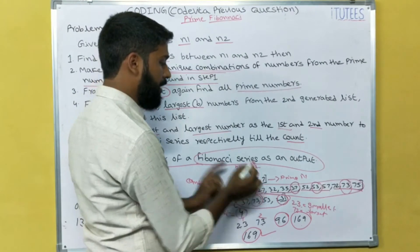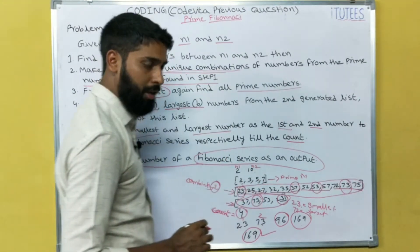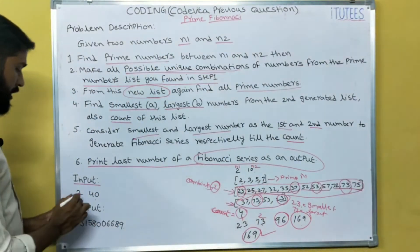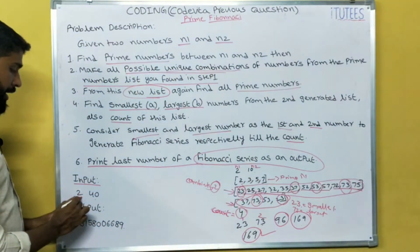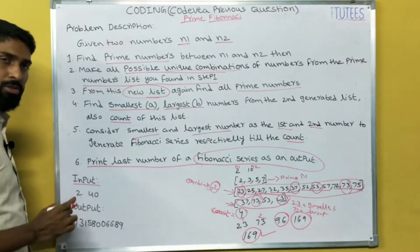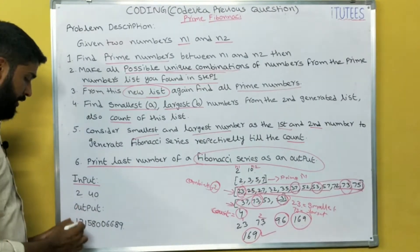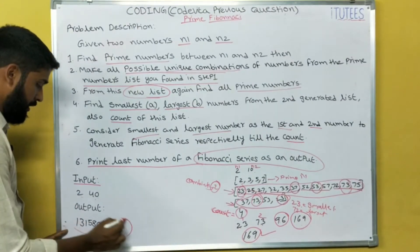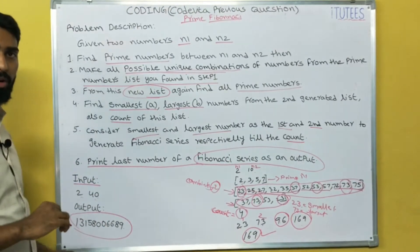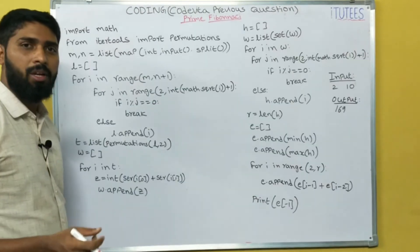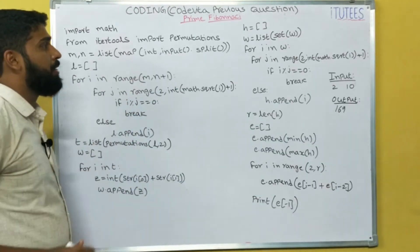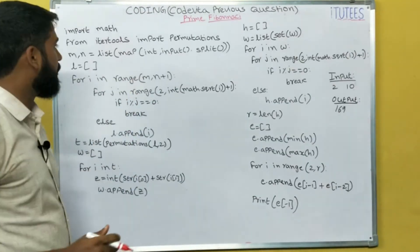If n1 equals to 2 and n2 equals to 10, the output is 169. Same like that, if you give n1 equals to 2 and n2 equals to 40, then the output is this number. Now we see the program for prime Fibonacci.